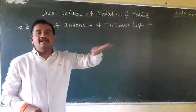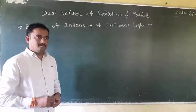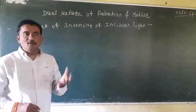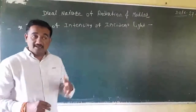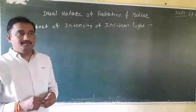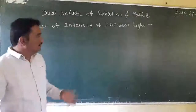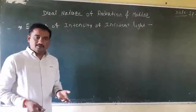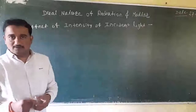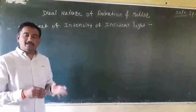It is seen that at lower intensity the value of photoelectric current is very less. But as the intensity of incident radiation increases, the photoelectric current also increases. Simply, more intense light means more number of photons. Therefore, there are more photon-electron collisions between the photons and electrons.